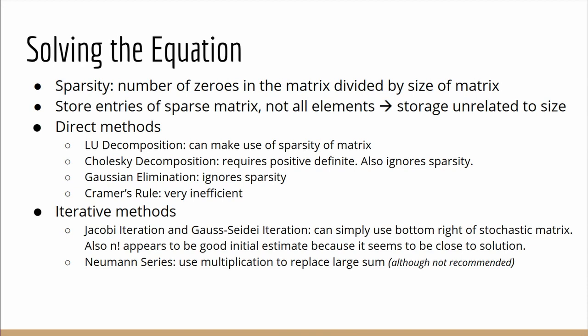As for iterative methods, that is we attempt to find the solution by applying an algorithm iteratively until we get a good enough approximation. So we propose that the Jacobi iteration and Gauss-Seidel iteration can simply use the bottom right of the stochastic matrix, that is Q_n, and we also suggested that n factorial appears to be a good initial estimate because it seems close to the solution we found using direct methods. As for Neumann series, although it's not recommended in hindsight, if it were to work then we can use matrix multiplication to replace the large sum that it requires.